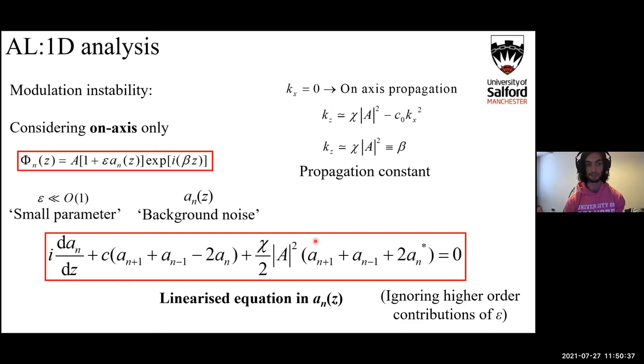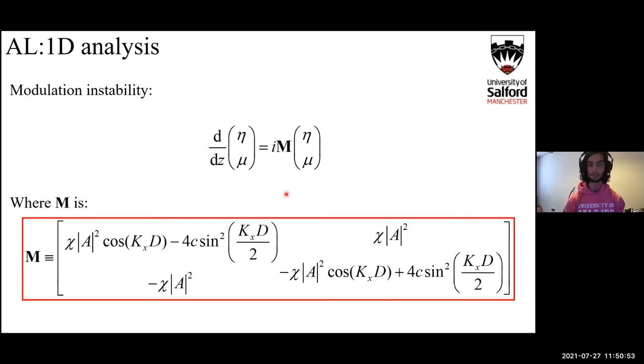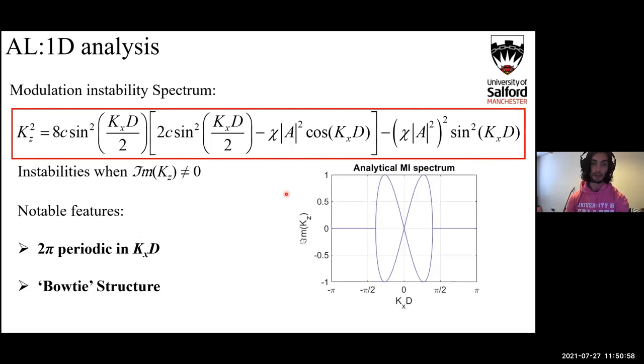Again, we can take a more complicated plane wave solution, and this time it's only considering the on-axis. This time it's going to have some perturbation or background noise called a_n, and it's a function of z. From that we're going to form a linearized equation in a_n(z) where we're looking where the equation has Fourier mode solutions is given with the complex exponential solutions for either mu and eta that are dependent on z. Then from that we're going to form a two by two matrix problem by substituting it all into the linearized equation, where the matrix M is given as follows. This can be solved to give the dispersion relation for the background noise.